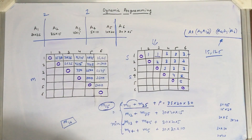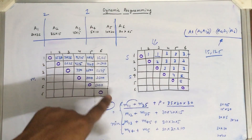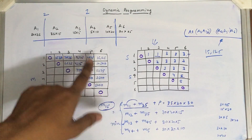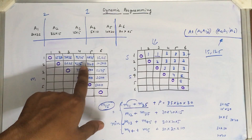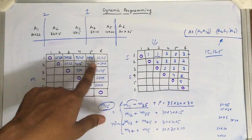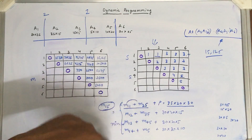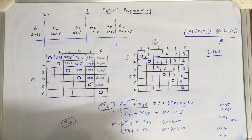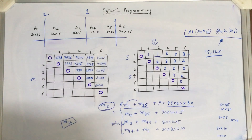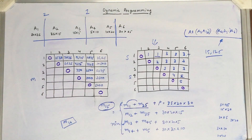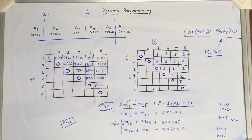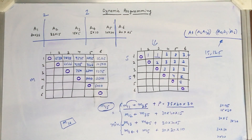I hope you understand the problem of matrix chain multiplication. You can try the steps not covered in this video — try to find the values for m16, m26, and m36, check all the possibilities and scenarios, and find the optimal one. Thank you very much for watching. If you have any doubts, you can ask in the comment section.